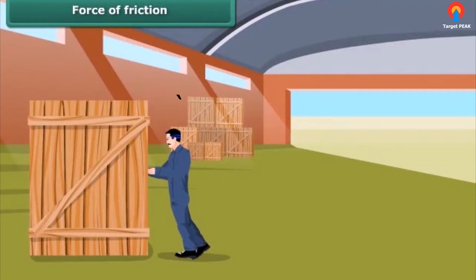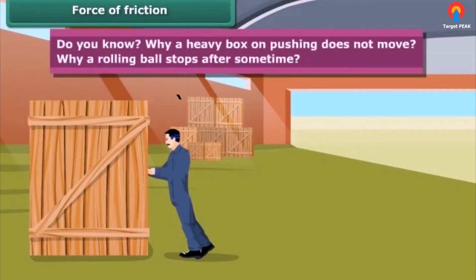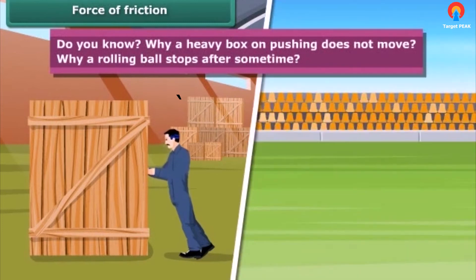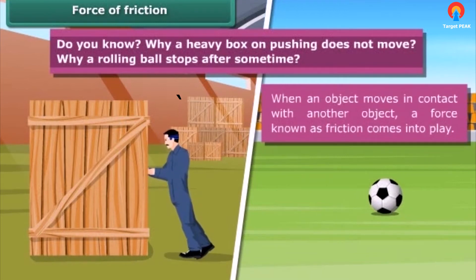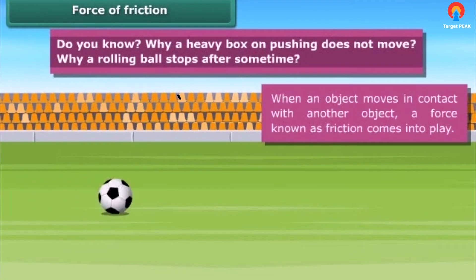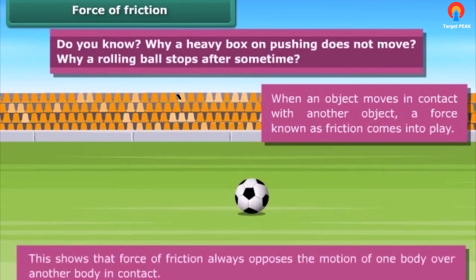Force of friction: Do you know why a heavy box on pushing does not move? Why a rolling ball stops after some time? When an object moves in contact with another object, a force known as friction comes into play. Note that the force of friction always acts on all objects and its direction is always opposite to the direction of motion. The moving object in the animation gradually slows down and ultimately stops due to the force of friction. This shows that force of friction always opposes the motion of one body over another body in contact.